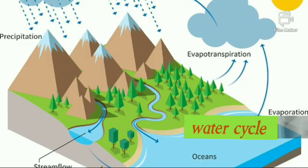The water cycle is a biogeochemical cycle that involves the continuous movement of water on, above, and below the surface of the Earth.